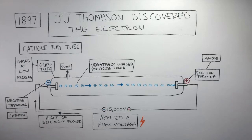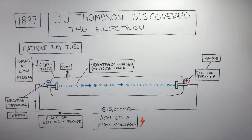This is known as the cathode ray. The negatively charged particles are attracted to the anode because this is the positive terminal. Negatively charged particles are attracted to the positive terminal.